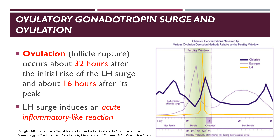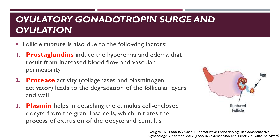Ovulation, or follicle rupture, occurs about 32 hours after the initial rise of the LH surge and about 16 hours after the peak of the LH surge. The LH surge induces an acute inflammatory-like reaction when it triggers follicle rupture, involving several chemicals such as prostaglandins, which mediate hyperemia and edema from increased blood flow and vascular permeability; protease activity such as collagenases and plasminogen activator that degrade the follicular wall; and plasmin, which helps detach the cumulus cell-enclosed oocyte from the granulosa cells, initiating extrusion of the oocyte and cumulus.